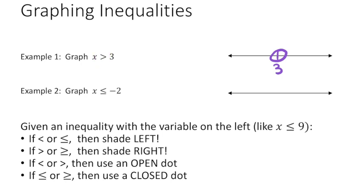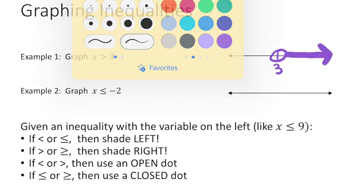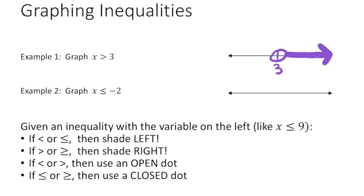Our rules also say that if it points to the right, we shade to the right. So I'm going to shade this number line to the right and then draw an arrow to show that this goes on forever. Now let's take a second to see what I graphed and what it means.